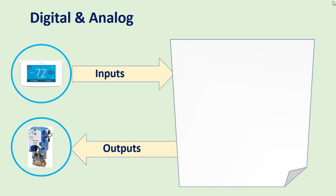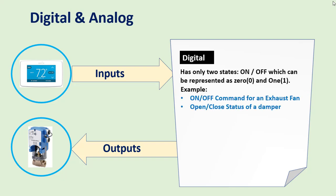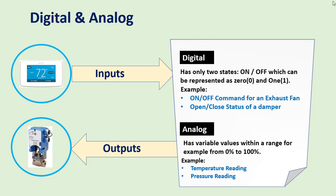Inputs or outputs to a control system can be either digital or analog. A digital signal has only two states — either on or off, represented as 0 and 1. An example is an on/off command for an exhaust fan or open/close status of a damper. An analog signal has variable values within a range, for example 0 to 10 volt or 4 to 20 mA. Examples include temperature readings from a temperature transmitter, pressure readings from a pressure transmitter, or a 0 to 10 volt control signal to a damper or valve actuator.